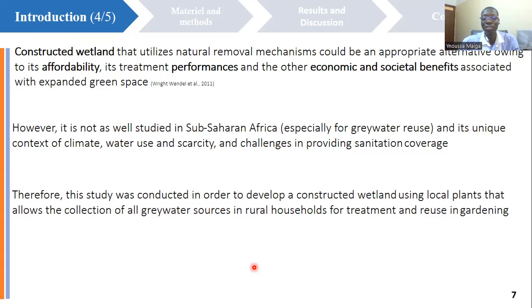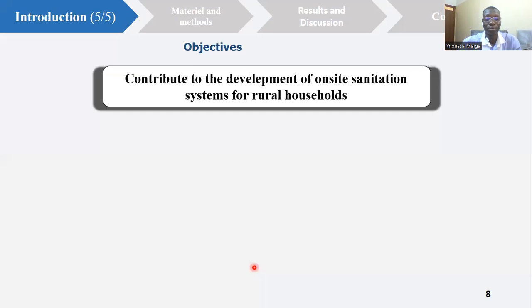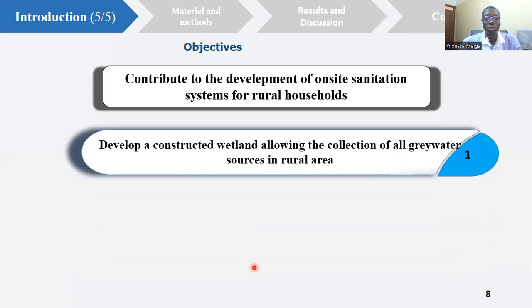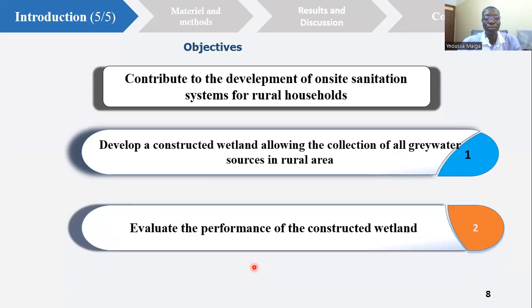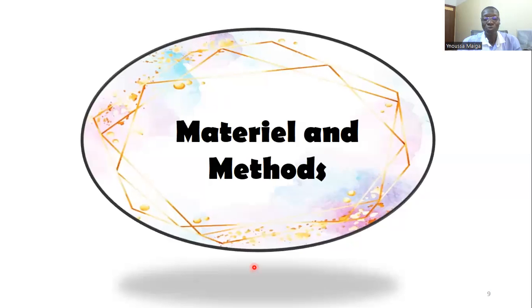Therefore, this study was conducted in order to develop a constructed wetland using local plants that allows the collection of all greywater sources produced in rural households for treatment and reuse in gardening. The main objective of the study was to contribute to the development of on-site sanitation systems for rural households, specifically to develop and evaluate the performances of a constructed wetland.